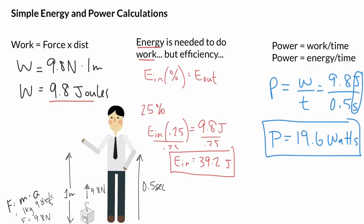That means that they'd have to have or use 39.2 joules worth of energy in order to do the 9.8 joules worth of work. And then lastly, in terms of power, we could say that this person put out 19.6 watts of power, or this person showed 19.6 watts of power based on the speed that they did the work. Hopefully that helps put all these pieces together for you in all this math madness.